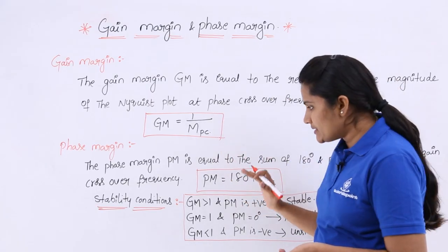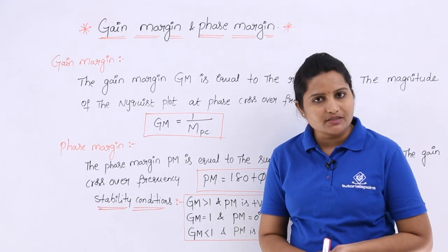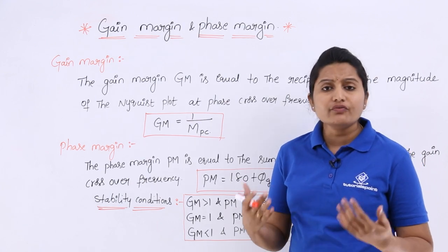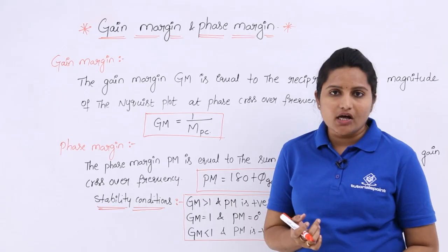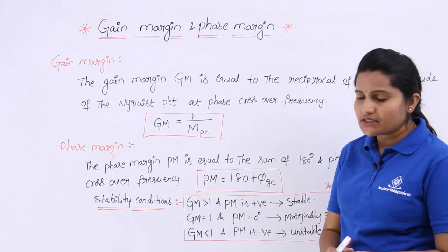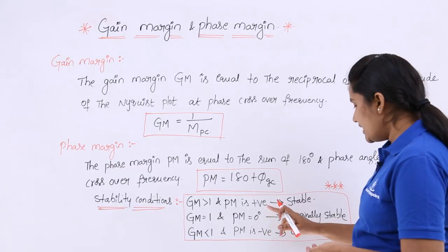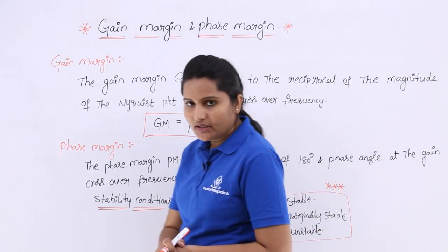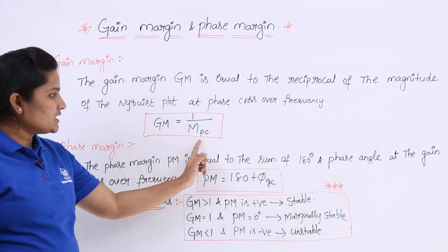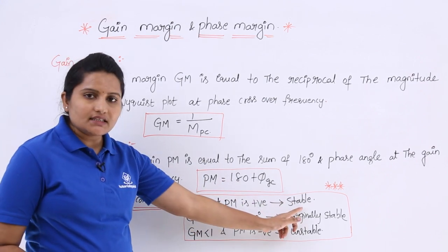After calculating gain margin and phase margin, we can ensure the stability of the system. We can analyze the stability of the control system using different stability conditions, which are very important. If the gain margin is greater than 1 and the phase margin is positive, then the system is stable. When the reciprocal value is greater than 1 and the phase margin value is positive, the system is said to be stable.